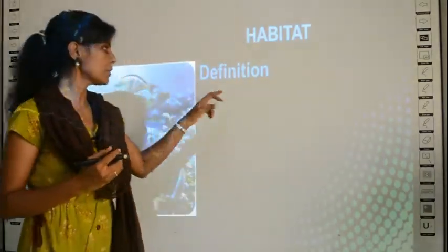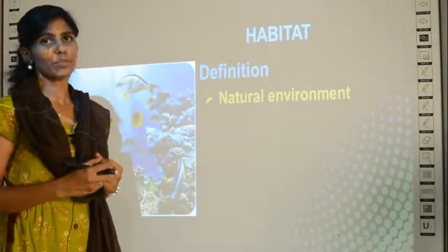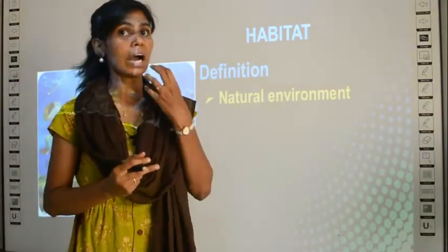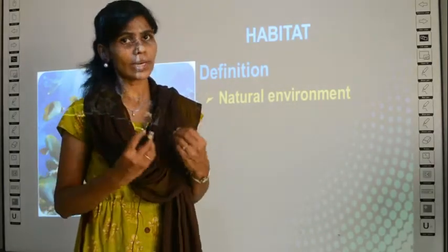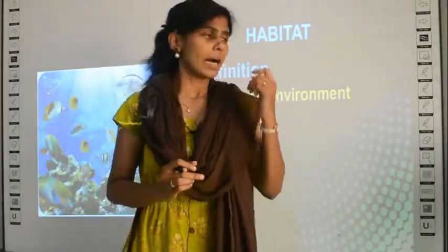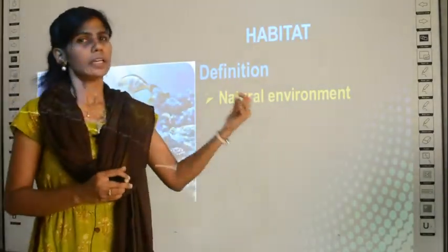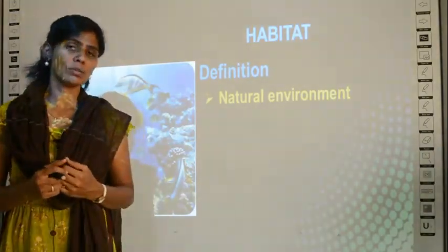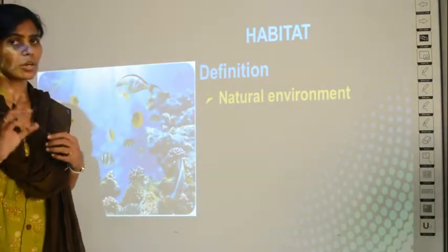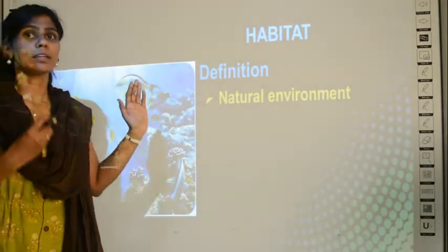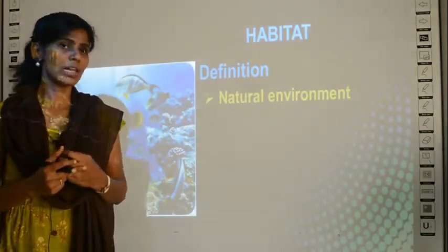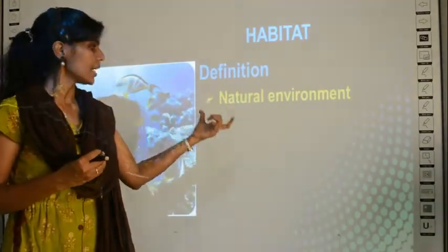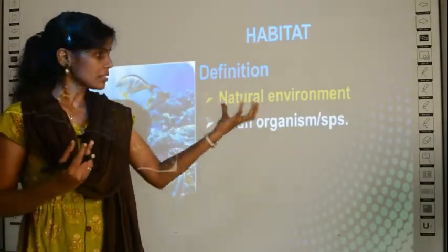How can you define a habitat? A habitat is a natural environment. For example, you cannot call your house a habitat because it is man-made — we only build the house, it is not natural. Habitat is a natural environment. Water is mostly natural. Of course, we do have fish tanks in our houses, but that is not a natural environment. Habitat is either a pond, a lake, or a river — these are all natural habitats. You can only address something as a habitat when it is in the natural environment of any organism or species.